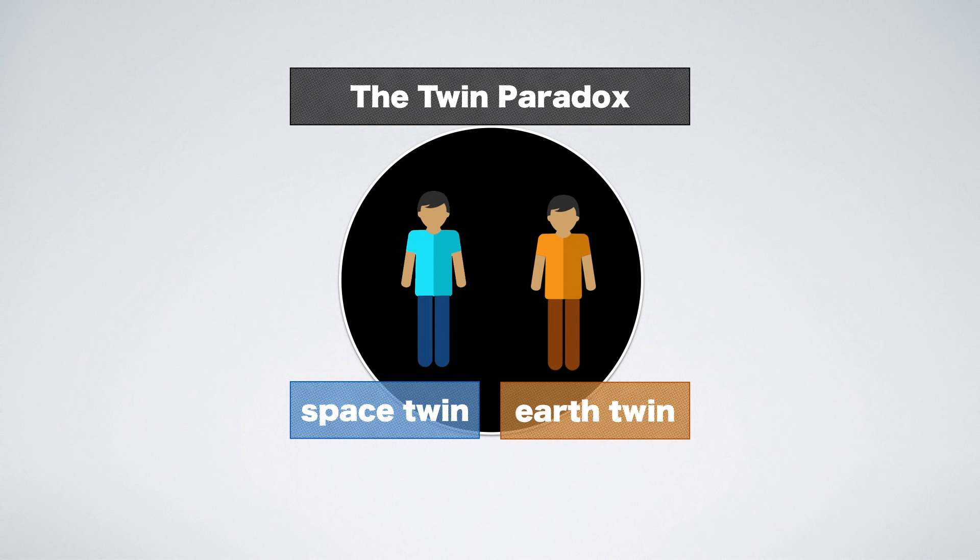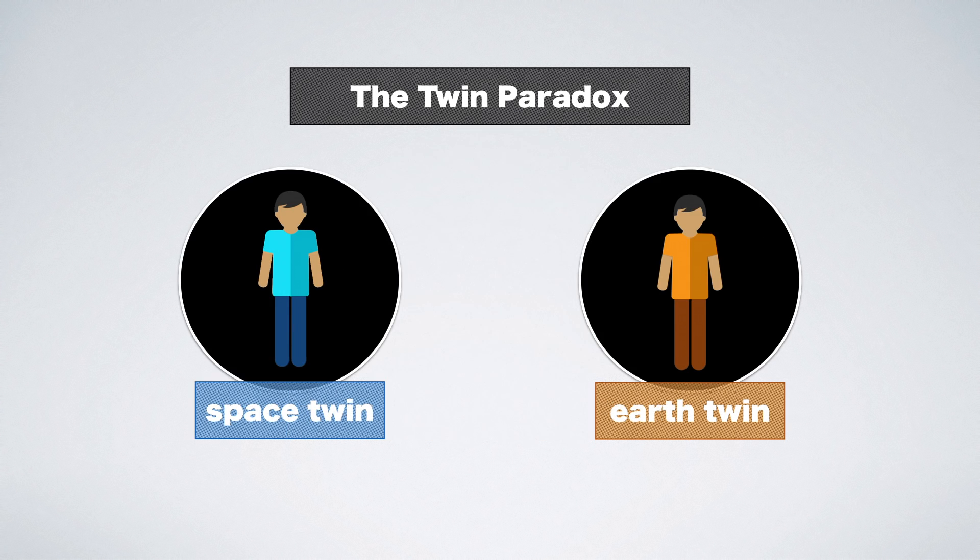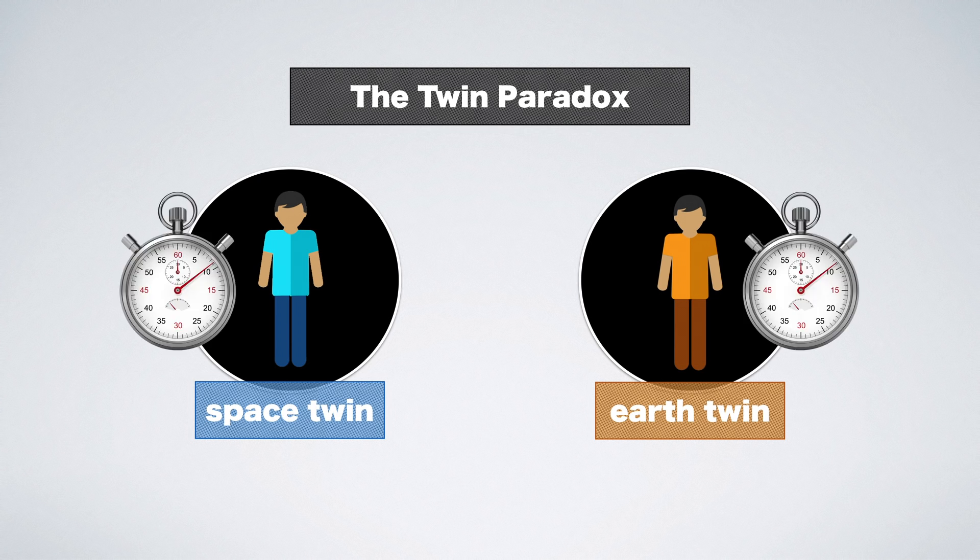The easiest to understand resolution lies in separating the reference frames of the twins and examining how much time each twin measures on their own clock during the journey of Space Twin. Let's start with Earth Twin.